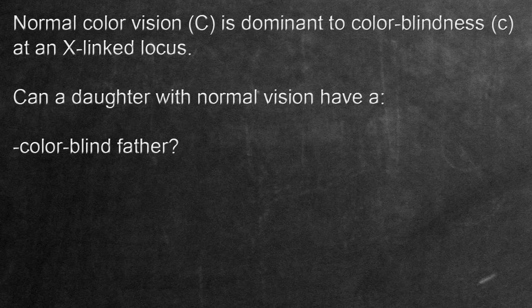Hello there and welcome back. In this video we're going to be solving a genetics problem, a genetics problem about color vision. Normal color vision, capital C, is dominant to color blindness, little c, at an X-linked locus.